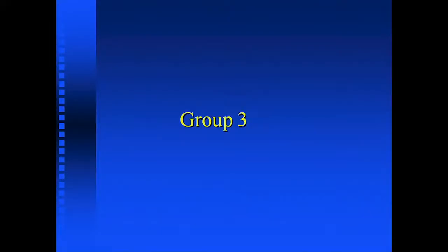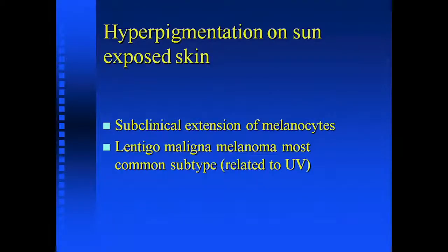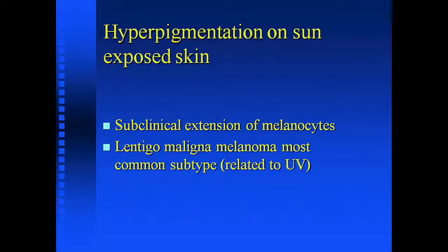Group three: hyperpigmentation on sun-exposed skin. This can be a real problem. Subclinical extension of melanocytes is something you see primarily in the lentigo maligna type of melanoma. The definitions of what constitutes an adequate margin in melanoma are rather elastic. They have changed over the years, and there are now recommendations that melanoma in situ margins may have to be more than five millimeters, primarily because of studies on subclinical extension on sun-exposed skin, particularly facial skin.